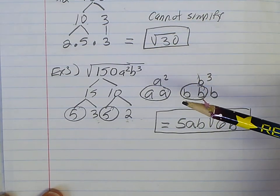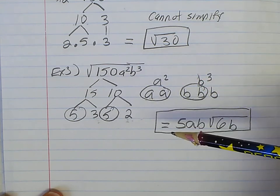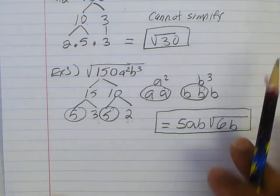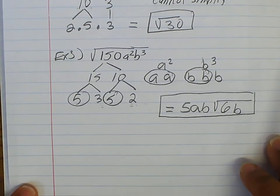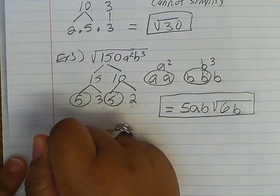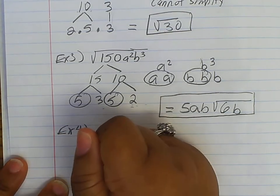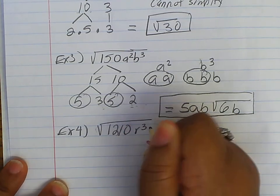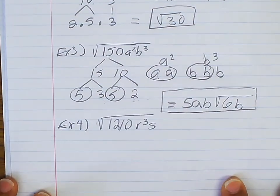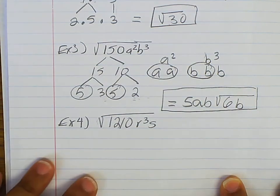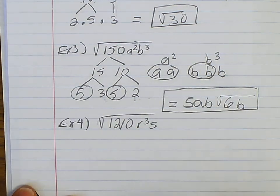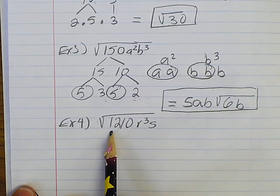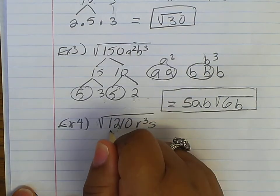If you're struggling with these, just watch the video again, and during class time I can help you as you work. Let's do one more example — I think I can squeeze it on this page. We've got the square root of 1210r³s. Think about what numbers can give you this — I think 121 times 10 works.